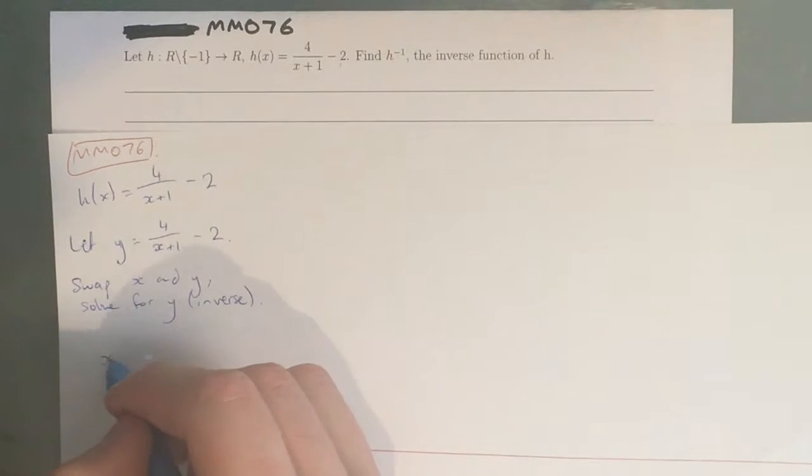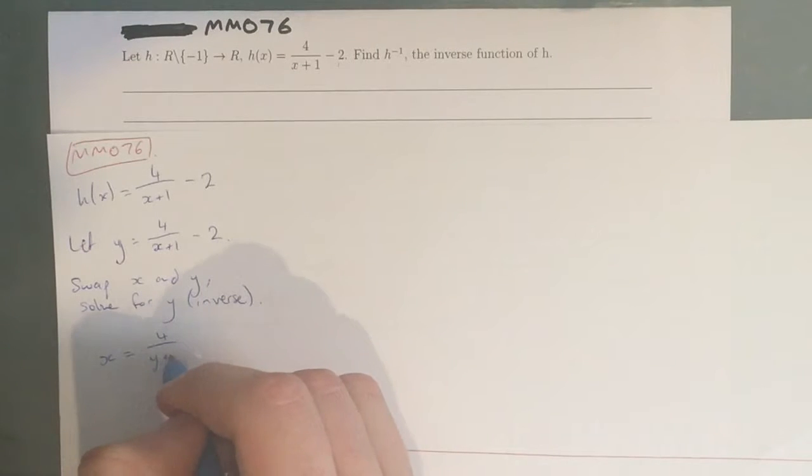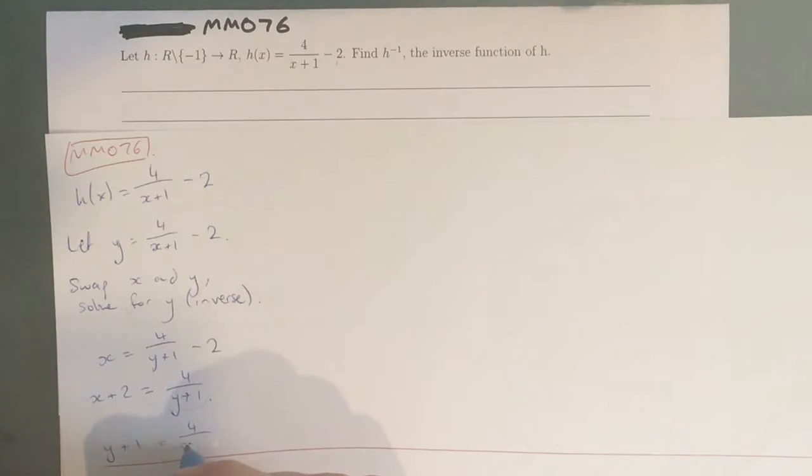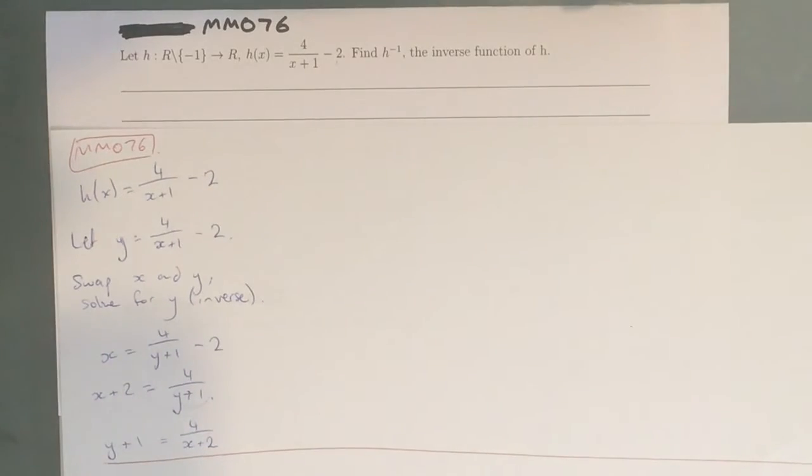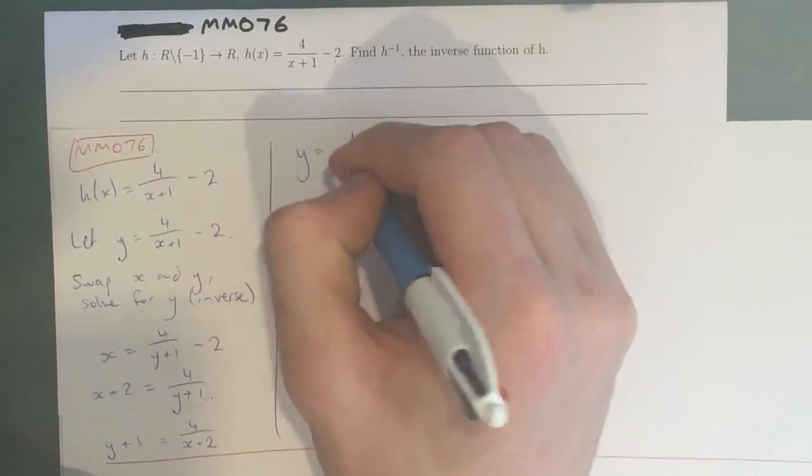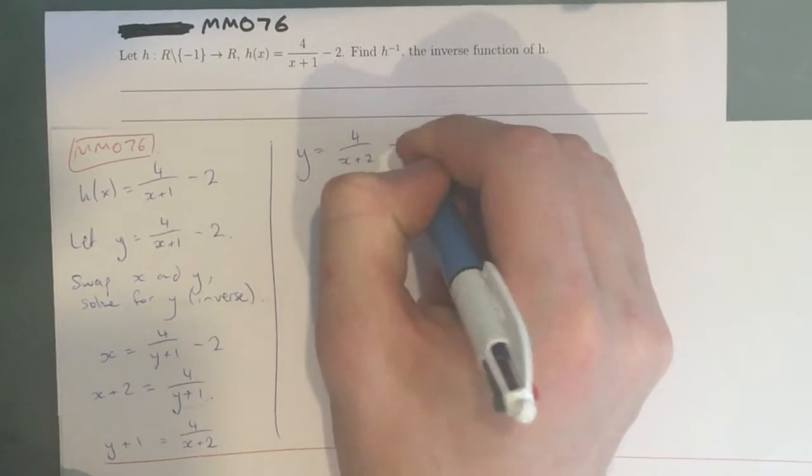So, we have x equals 4 over y plus 1, take 2, which gives us x plus 2 equals 4 over y plus 1. And then we can cross-multiply this up and cross-multiply this down, which means we get y plus 1 equals 4 over x plus 2, which gives us y equals 4 over x plus 2 minus 1.